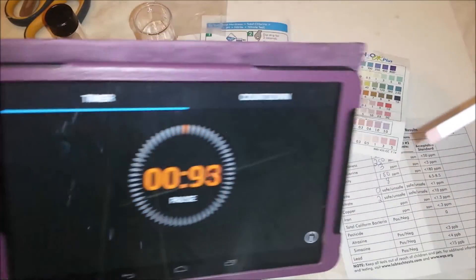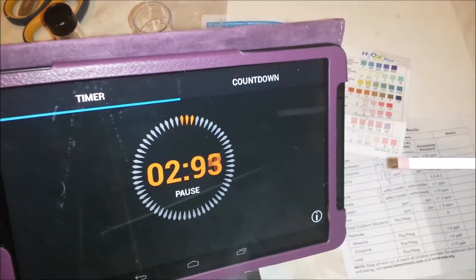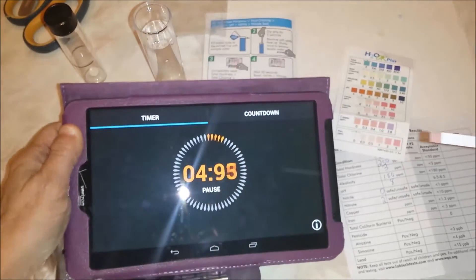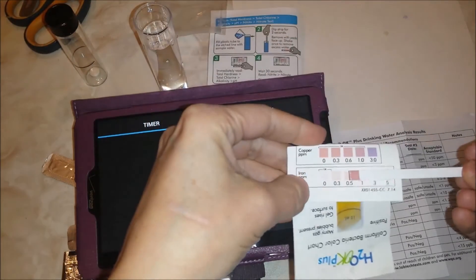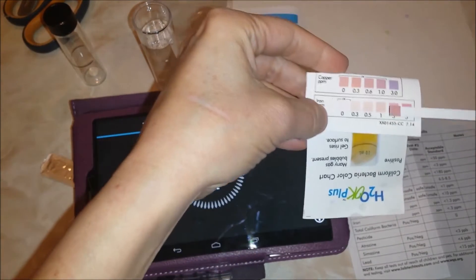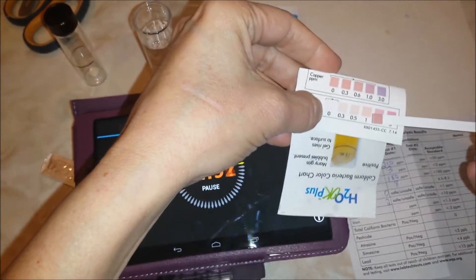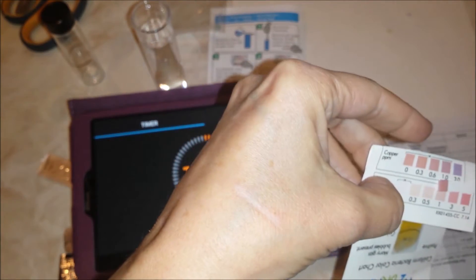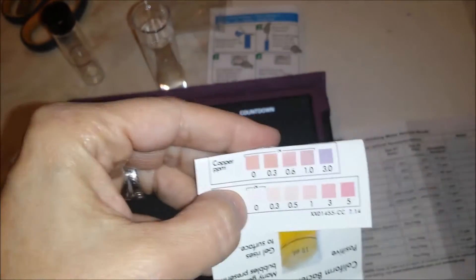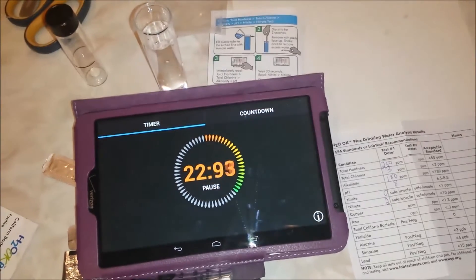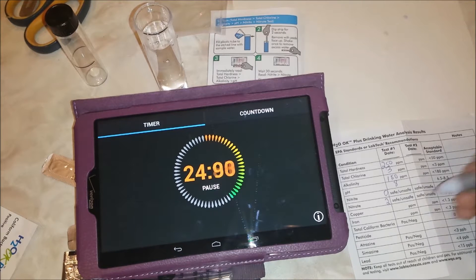Now we're going to wait 15 seconds and then read it. We're at 5 seconds. It said don't shake it off. Twelve, thirteen, fourteen, fifteen. I would say it's a 1. So let's go ahead and record that. Copper is a 1.